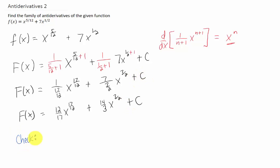We can always check our antiderivatives by taking a derivative. If we take a derivative of this function, we have to multiply by 17 twelfths. Well that's good news because the 17 twelfths multiplied by the 12 seventeenths just turns into a 1, and we have x to the 17 twelfths minus 1.